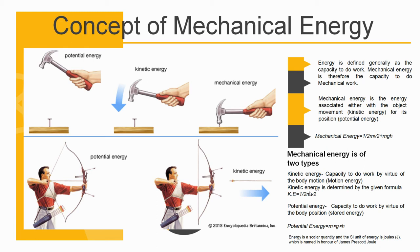Number two, potential energy. This means capacity to do work by virtue of the body position. That is said to be the stored energy. The potential energy is determined by the formula mgh. This means m represents the mass multiplied by g, the acceleration of gravity, multiplied by h, that is the body height.